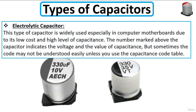But sometimes the code may not be understood easily, unless you use the capacitance code table. As you can see here for this electrolytic capacitor, the code is clear and evident. We have 330 microfarads and 10 volts — the working voltage.